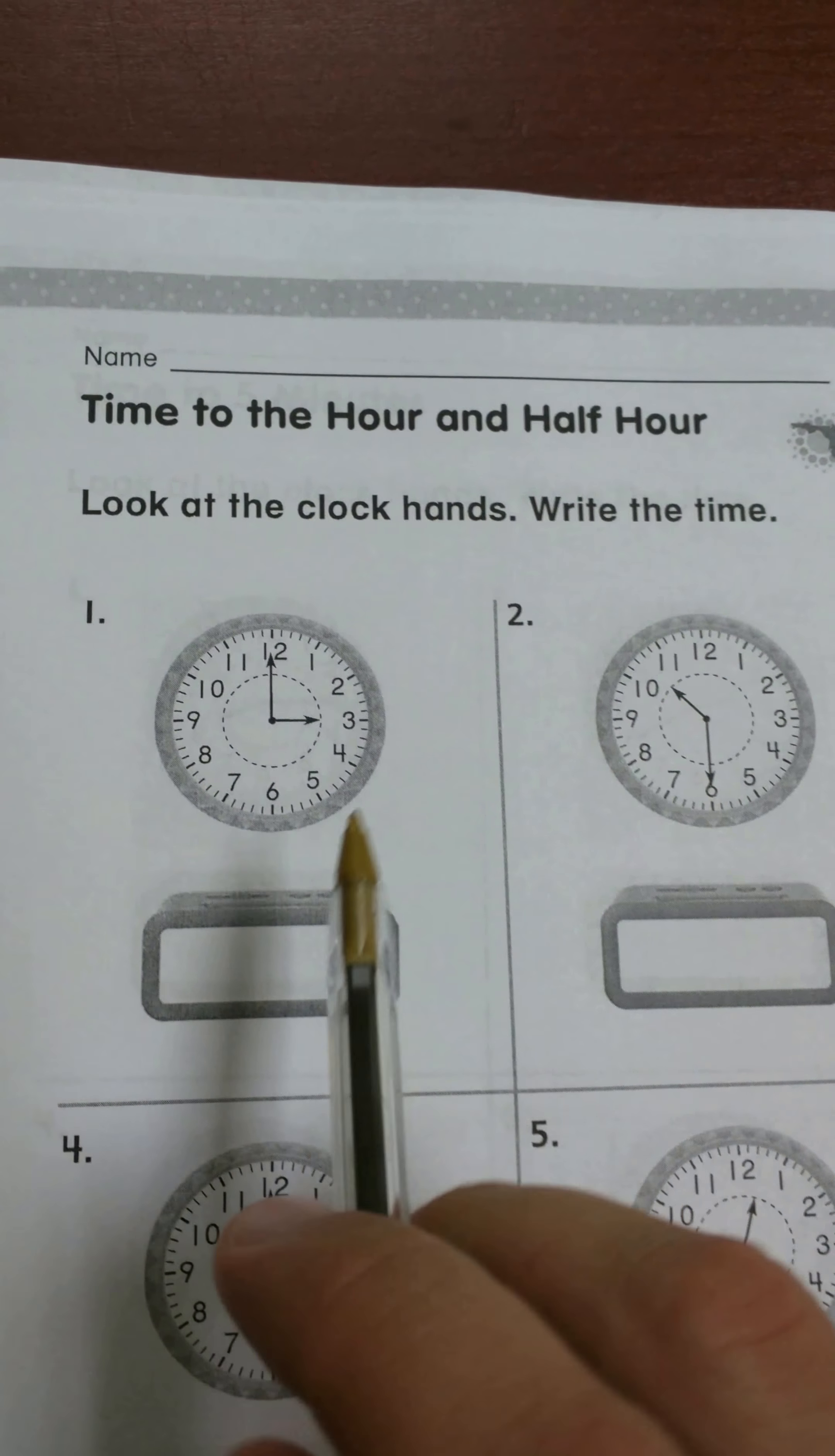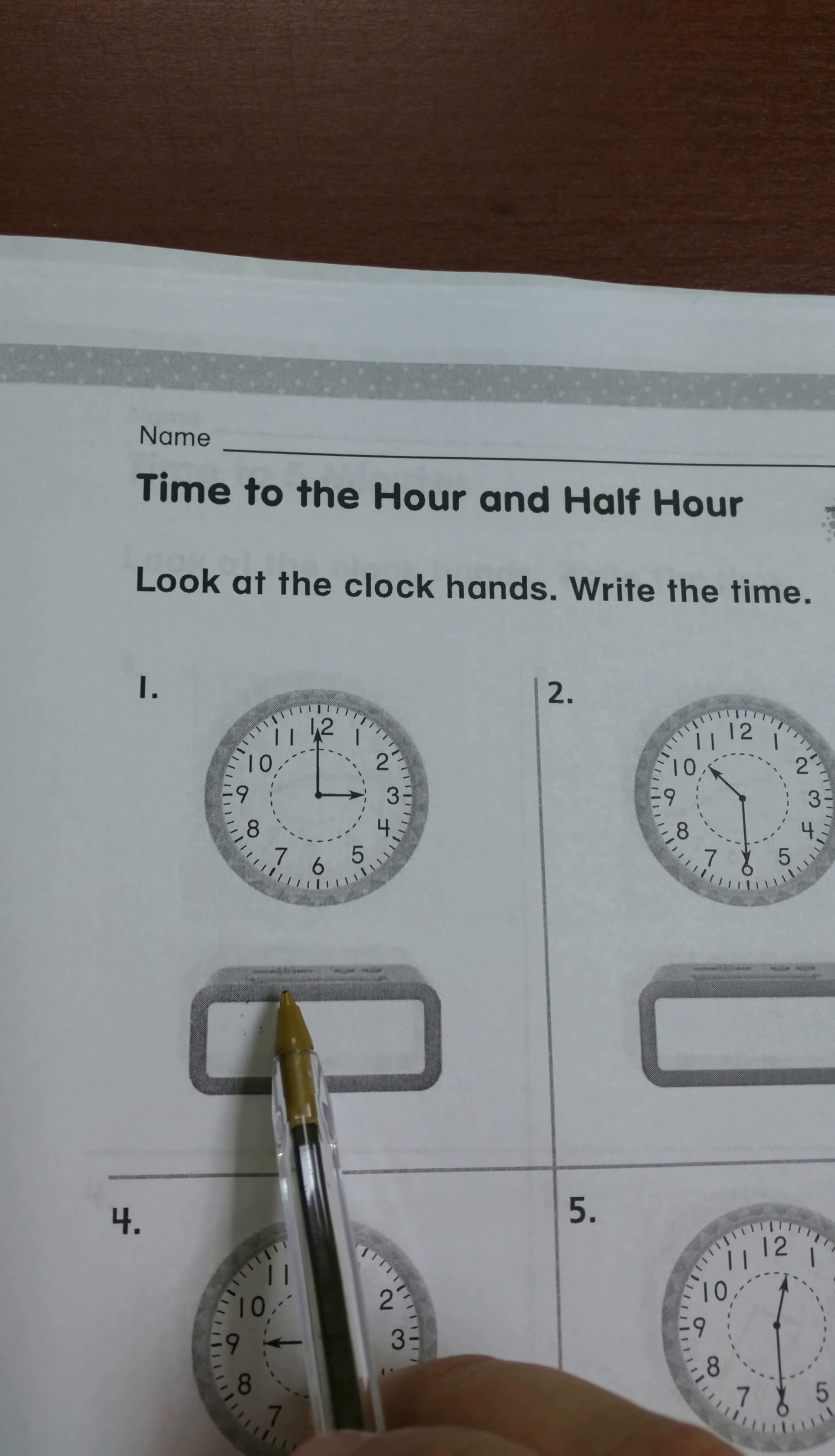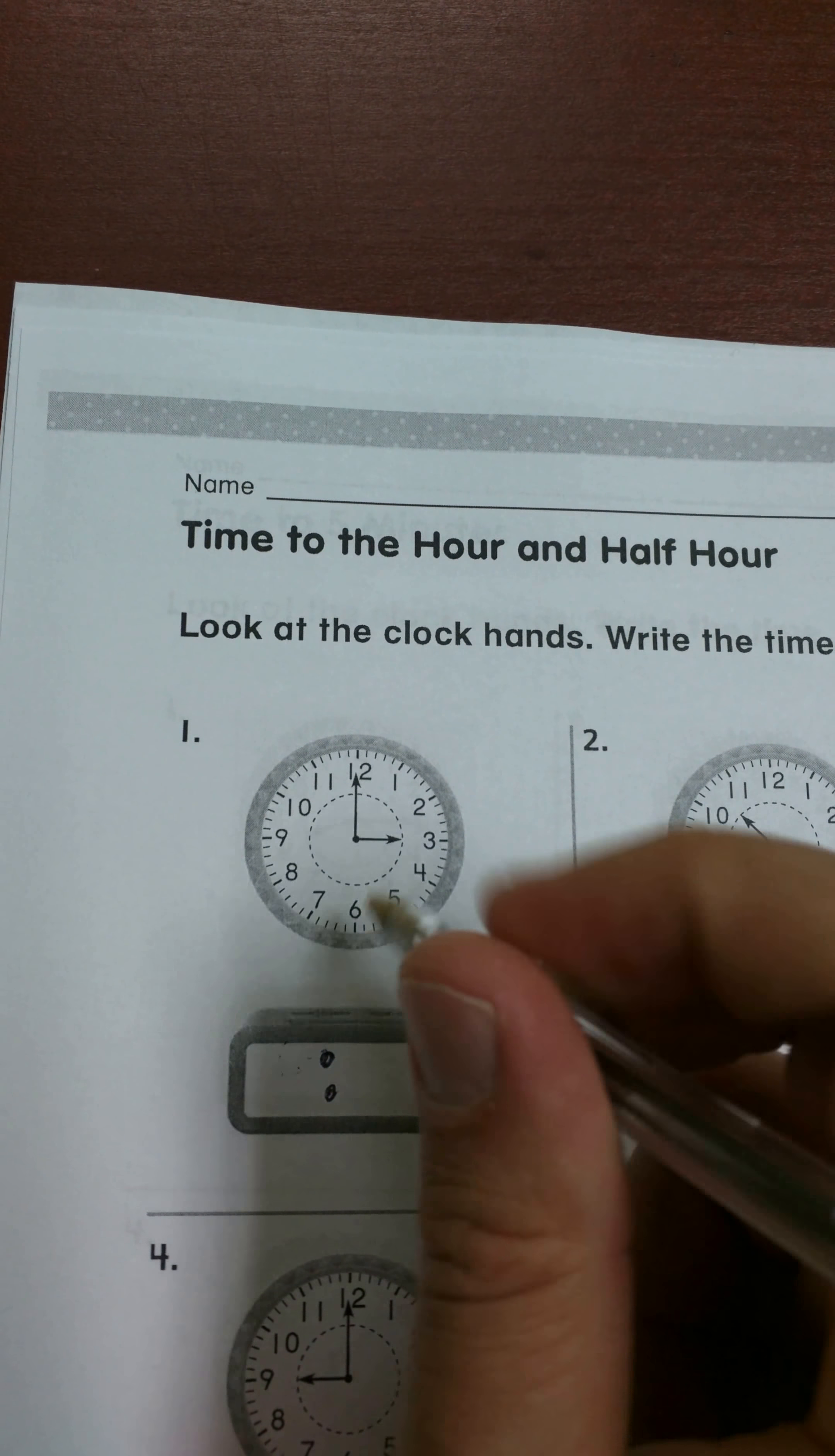Let's look at number one. I'll look at a couple different examples. Remember that the short hand is the hour hand, so that's the number that goes first on the left. Then on the other side of the colon - and this is what a colon looks like, you usually see this on a digital clock - so this is kind of a digital clock what they've made here.